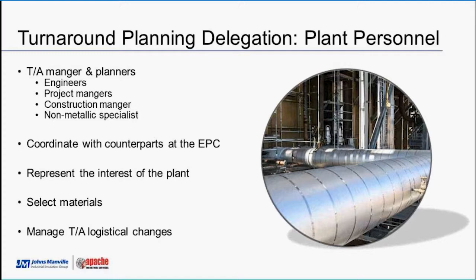The plant personnel will have a turnaround manager and planners — engineers, project managers, construction managers, and non-metallic specialists — all involved in that team. Each has a duty, and as a contractor you'll interact with them daily, updating on problems or progress. They ensure you're following plant specifications, working safely, maintaining good housekeeping, and that your materials match specifications. They also select materials, so the pre-planning stage is a great time for manufacturers and contractors to share information about new materials.